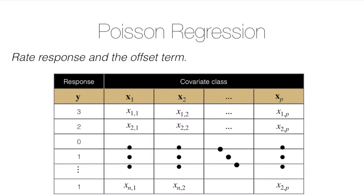Consider an example: suppose we want to construct a model predicting the number of times an individual is admitted to a hospital. The covariate class might include the person's age, gender, and health conditions like a heart condition or diabetes. In the data frame, the first individual was hospitalized three times, the next two times, the next zero times, and so on.